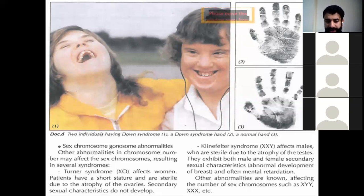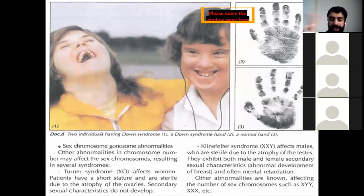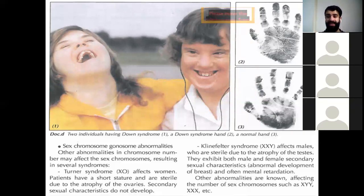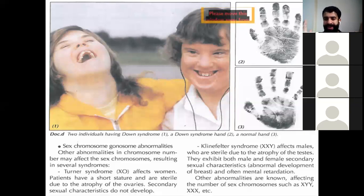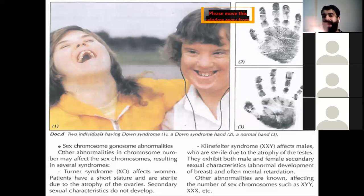Klinefelter syndrome affects males who are sterile due to atrophy of the testis. They exhibit both male and female secondary sexual characteristics — for example, abnormal development of the breast. Often they have mental retardation. So Klinefelter syndrome affects males, they are sterile since it affects the gonosomes, they have atrophy of the testis, and they show both male and female secondary sexual characteristics.